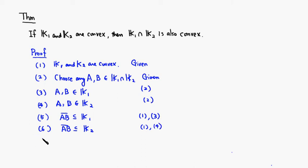Step seven: Since the entire line segment AB is inside k1 and k2 at the same time, AB is inside the intersection of k1 and k2. That comes from just combining steps 5 and 6.